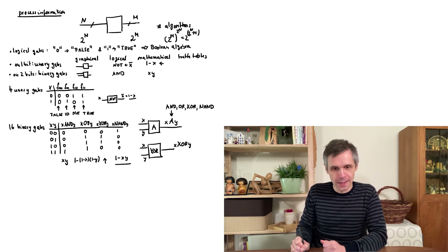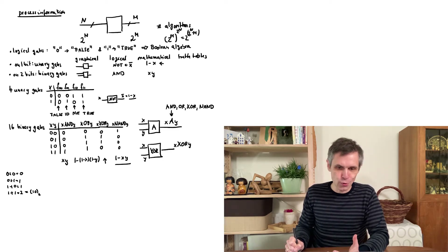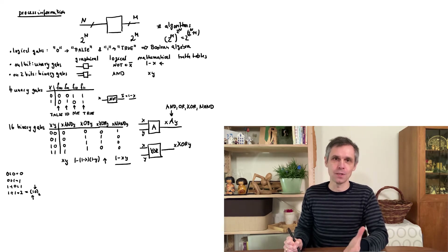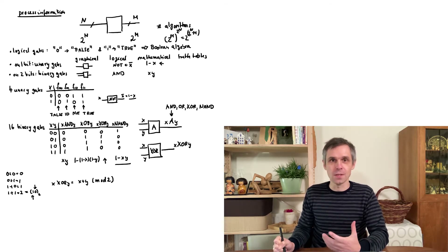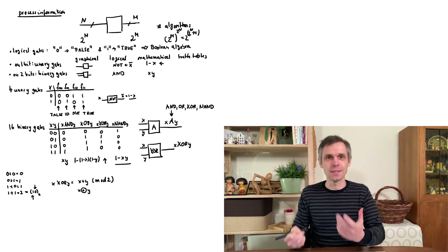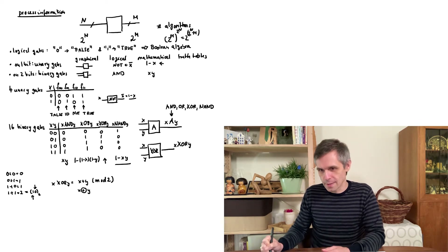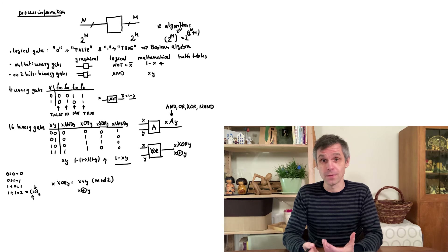Finally, the mathematical operation corresponding to XOR turns out to be almost like a sum: 0+0=0, 0+1=1, 1+0=1, and 1+1=2, which in binary representation is 10. What we want is just the last bit, obtained by taking this number modulo two — the remainder after division by two. So mathematically XOR is x plus y modulo 2. Because this operation is so important, we also use a shorthand notation: a plus sign with a circle around it. So the output is x ⊕ y, meaning addition of integers modulo two.